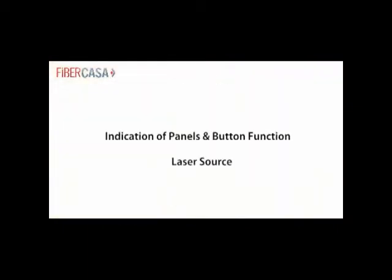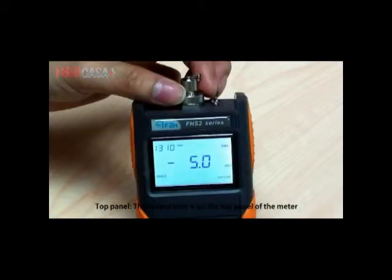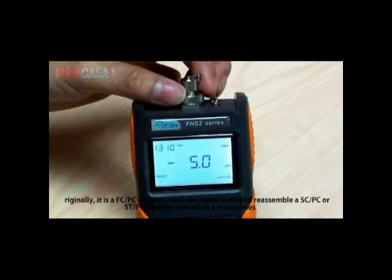Indication of Panel and Button Function - Laser Source Top Panel. The output port is on the top panel of the meter. Originally it is an FC-PC adapter. Users can screw it off and reassemble a SC-PC or ST-PC adapter offered as an accessory.